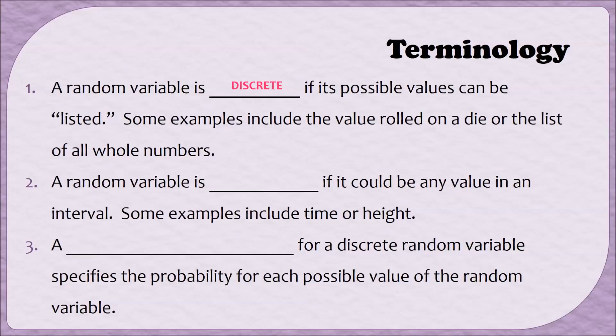In contrast, a random variable is continuous if it could be any value in an interval. So for example, this could be time or height. Now, we've seen these words before, discrete and continuous, back in Module 1, when we classified different types of data.